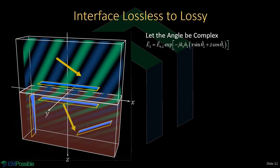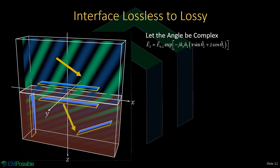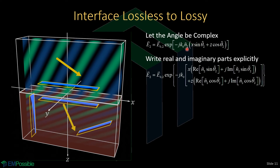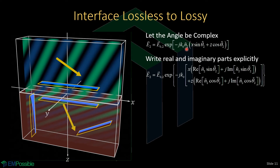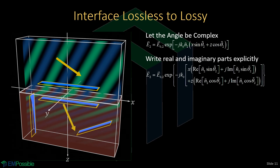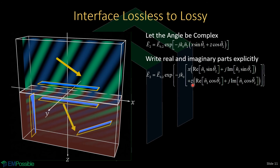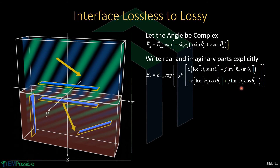One way to fix the equation is to let the angle in the second medium be a complex quantity — that's crazy, an angle being a complex number. To understand this, we write the real and imaginary parts explicitly. The refractive index is complex, so we bring it inside the parentheses to multiply the sine and cosine functions. We then separate real and imaginary parts: multiplying x we have the real part of N2 times sine theta2 plus j times the imaginary part of N2 times sine theta2, and similarly for the z term with cosine theta2.